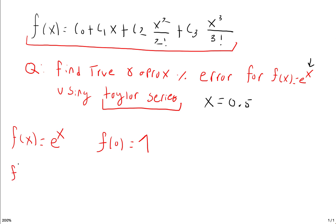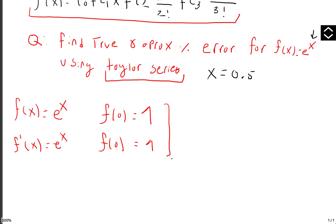Taking the first derivative of e to the x, that doesn't change — you get f at zero equals 1 again. As I mentioned, we're going to use only two terms. The Maclaurin series will keep going on forever, but if you use more terms, your true and approximate errors are going to keep shrinking with each iteration.